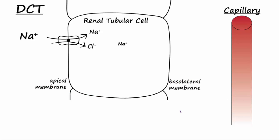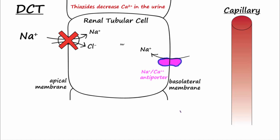For the treatment of recurrent calcium-containing kidney stones, the physician may prescribe a thiazide diuretic to decrease calcium levels in the urine. Thiazides block sodium chloride symporters on the apical membrane of renal tubular cells in the DCT, further decreasing intracellular sodium levels in the DCT cells. This increases the driving force for sodium to move into the cell via sodium-calcium antiporters on the basolateral membrane, and this increased antiporter activity moves more calcium that enters the cell via apical TRPV-5 channels out of the cell, where it is reabsorbed into the blood.